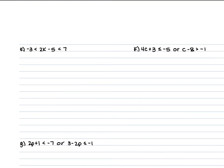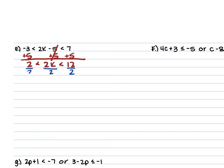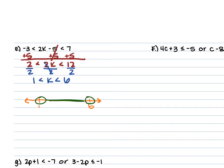For part E: -3 < 2k - 5 < 7. Add 5 to every part: -3 + 5 = 2, so 2 < 2k < 12. Divide every part by 2: 1 < k < 6. On the number line, you have open circles on both 1 and 6, and the line connects between the two circles.